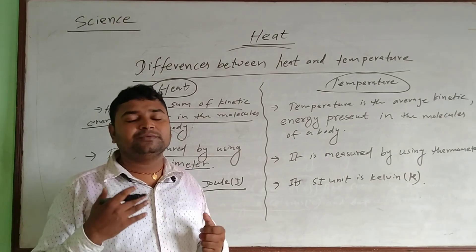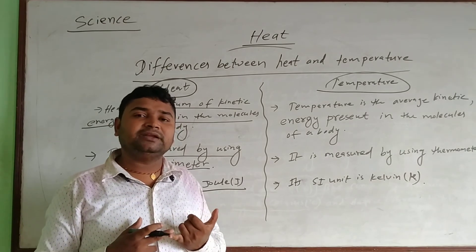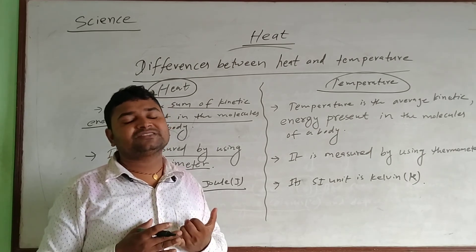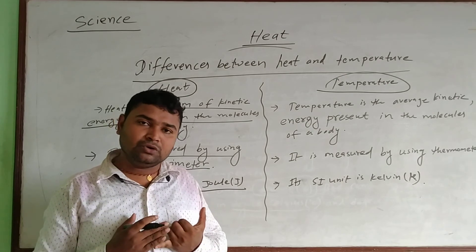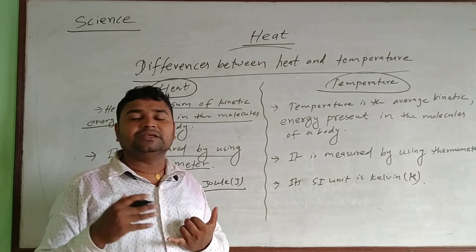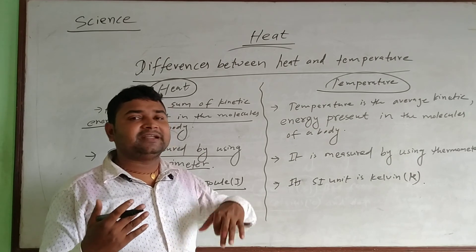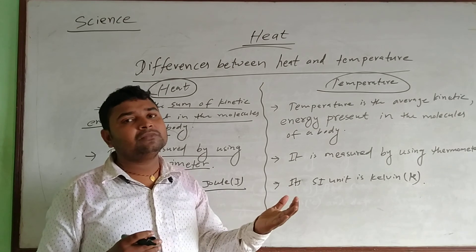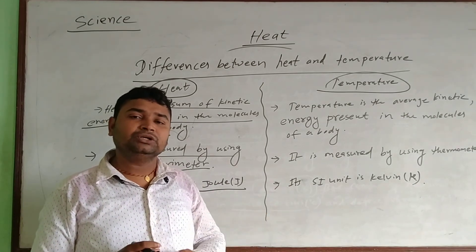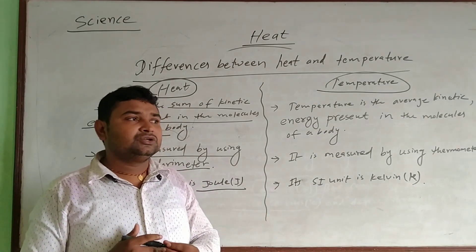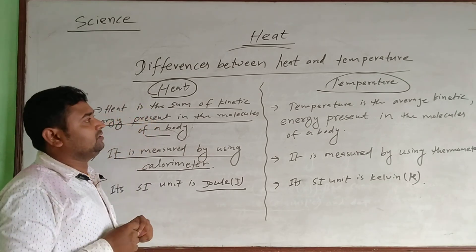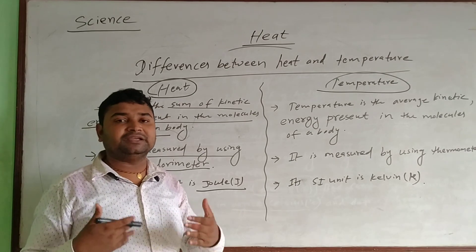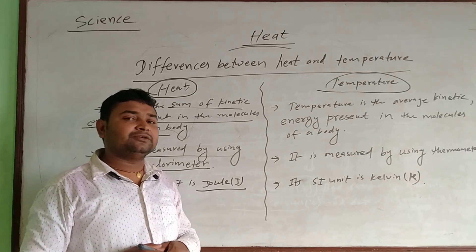So, once again, let's review. What is heat? Heat is the form of energy — we sense warmth. Heat always flows from the hotter body to the colder body, meaning heat always flows from a higher temperature to a lower temperature. Heat is always transmitted from a higher temperature to a lower temperature. In this way, we can discuss the different viewpoints about heat and temperature. Thank you.